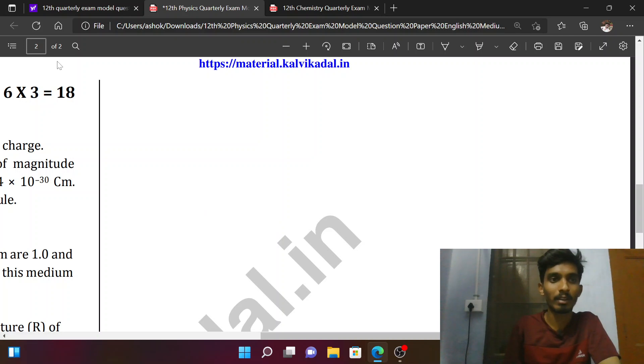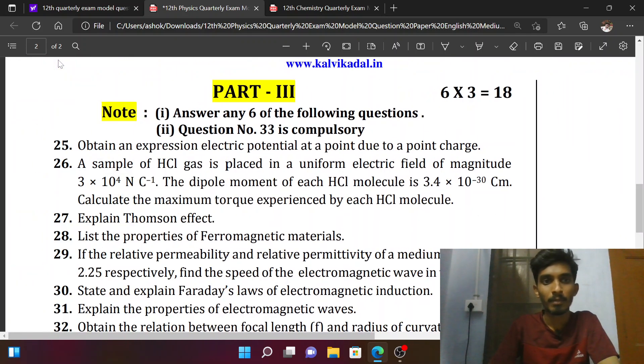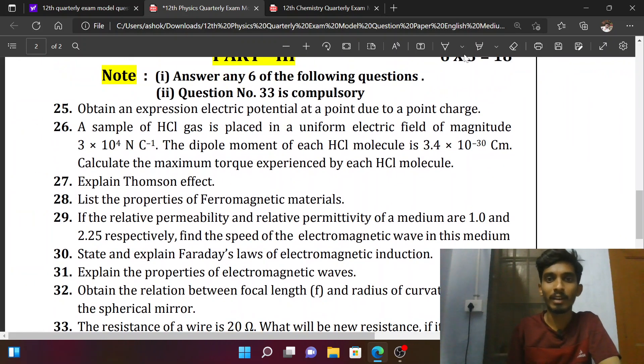Coming to 3 marks. Obtain an expression for electric potential due to a point charge. Point charge is one point charge: V is equal to 1 by 4π epsilon_0 q by r. This is the derivation. Two point charges—dipole is 5 marks. One point charge. This is tau is equal to p E sin θ.